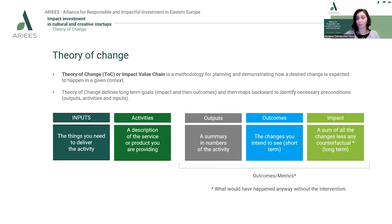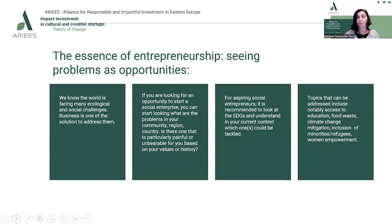The outcomes are the changes intended to be seen in the short term. The impact is a sum of all the changes on the long term, out of which we detect the counterfactual impact — the impact that would have happened anyway without the intervention of our activity. The essence of entrepreneurship, especially social entrepreneurship, is seeing problems as opportunities. The world is facing many ecological and social challenges and businesses have become one of the solutions used to address them.